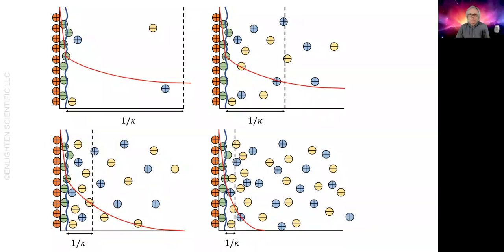At the highest salt concentration, shown on the bottom right, the double layer thickness is very thin compared to the most dilute salt concentration.